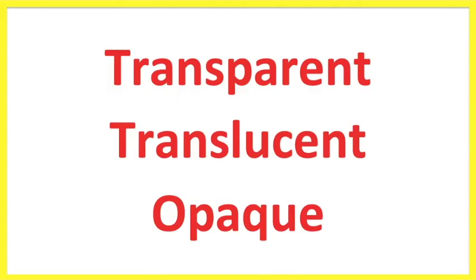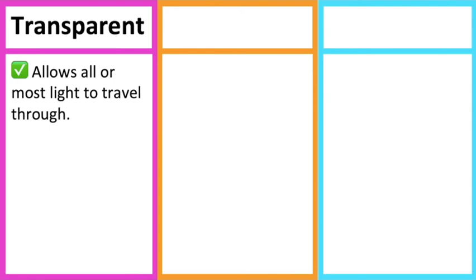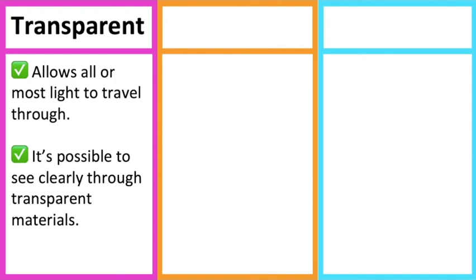Different materials allow different amounts of light to pass through them. Depending on the level of light allowed through, the material can be transparent, translucent, or opaque. Transparent refers to a material that allows all or most light to travel through. It's possible to see clearly through transparent materials — for example, glass.